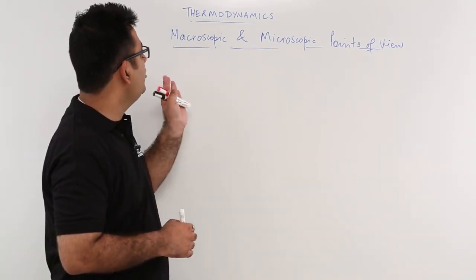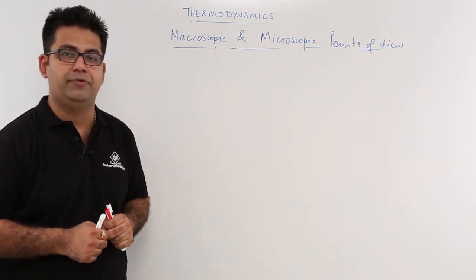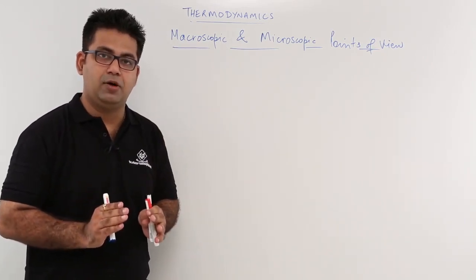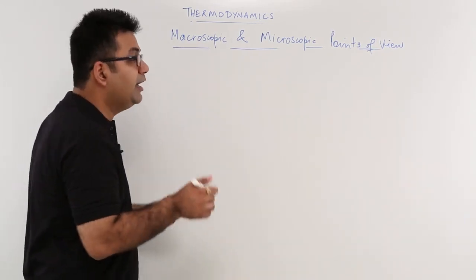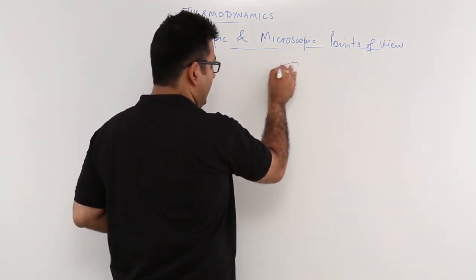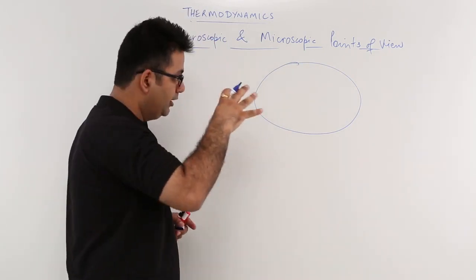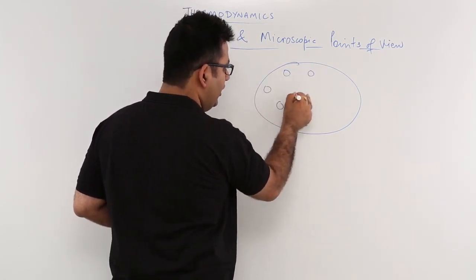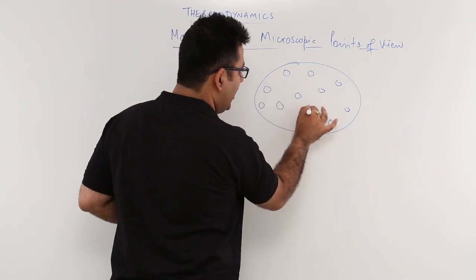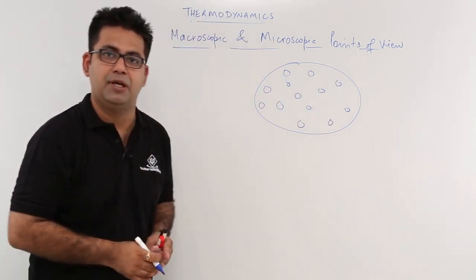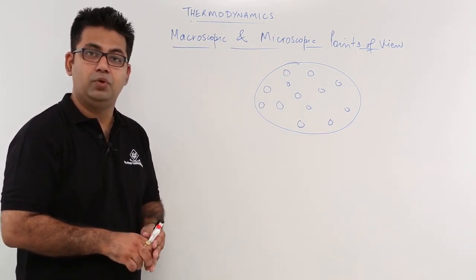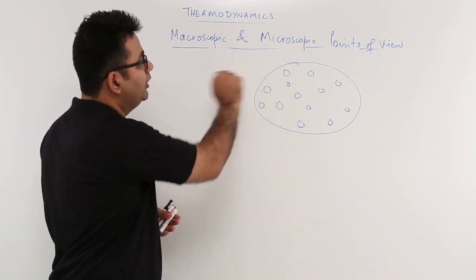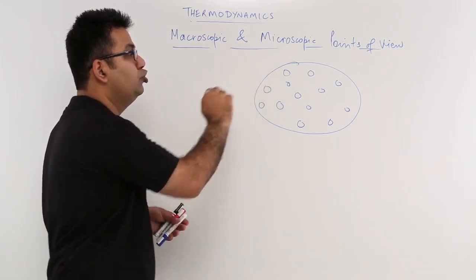In this video let's talk about macroscopic and microscopic points of view. This is not a very difficult topic to understand. We all know that each substance, when you look at it under a microscope, is made up of a very large number of molecules. If I have to study the properties of a particular substance, I need to refer to these two points of view.